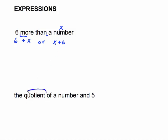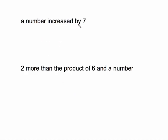'The quotient of a number and five' — 'quotient' is one of those words you need to memorize. As soon as you see quotient, instead of using a division sign I suggest you draw a fraction bar. Continuing left to right: 'a number' means x goes on top because we saw it first, then 'and five' puts five on the bottom. This is the same as x divided by five.